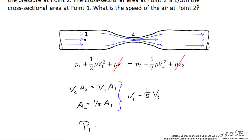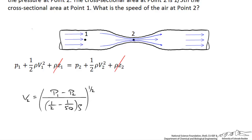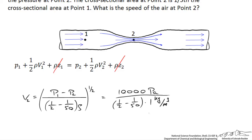Making the substitution into Bernoulli's equation, I have P₁ plus one-half rho times (one-fifth V₂)² equal to P₂ plus one-half rho V₂². Solving for V₂, I get the pressure difference divided by the term (one-half minus one-fiftieth) times rho, and then take the square root. Plugging in numbers: 10,000 pascals divided by (one-half minus one-fiftieth) times rho, where rho equals 1 kilogram per cubic meter — a reasonable value for air.